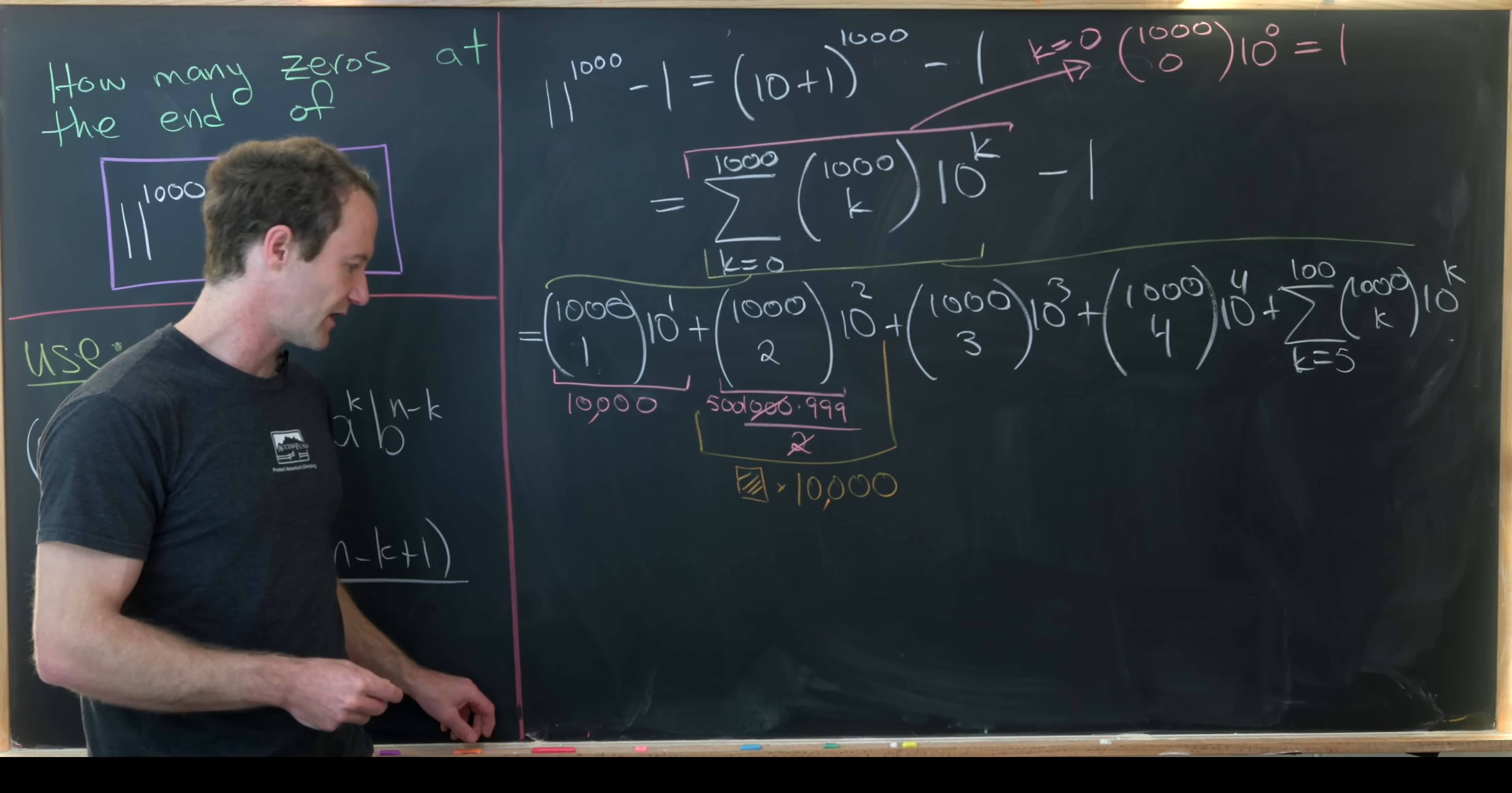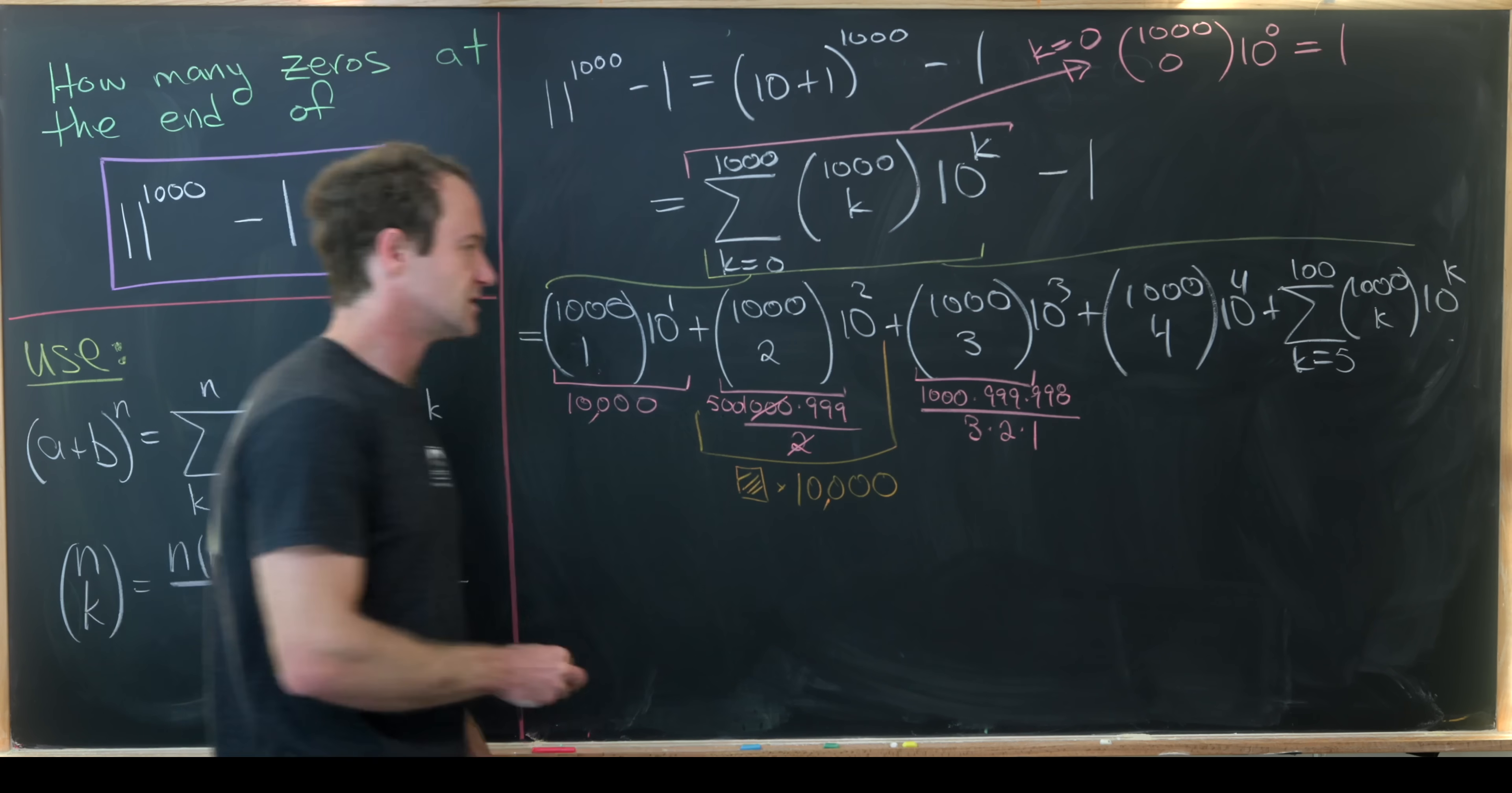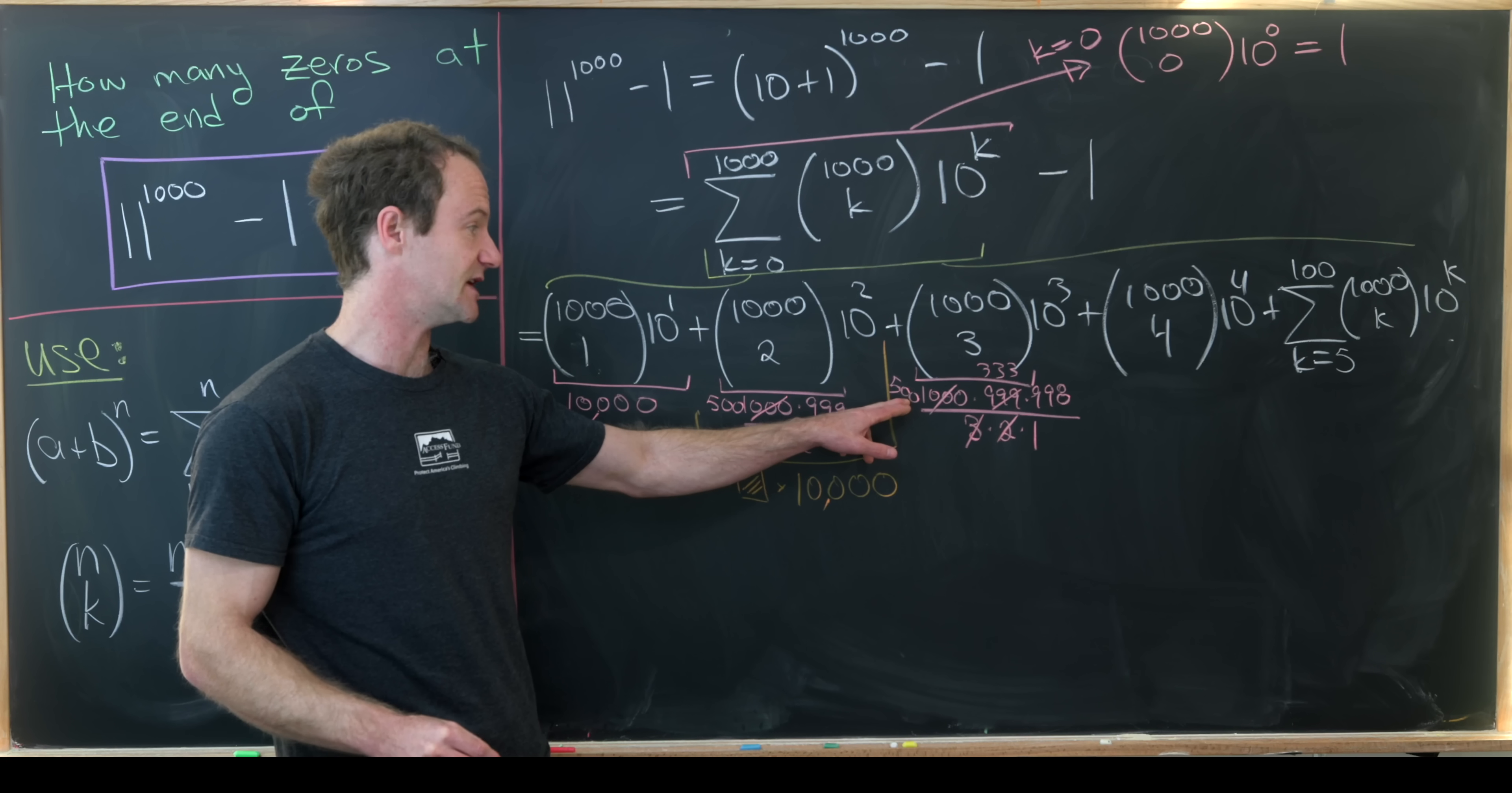Okay now we're going to play the same game just moving down the line. So 1,000 choose 3 will be 1,000 times 999 times 998 over 3 factorial which is 3 times 2 times 1. So we can make some cancellations. So 3 will cancel this 999 down to 333, 2 will cancel this 1,000 down to 500, and notice we'll be left with a number that ends in two zeros.